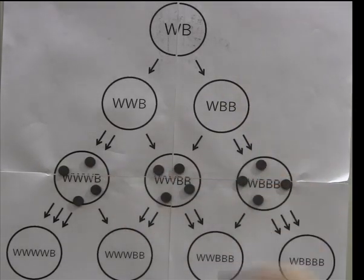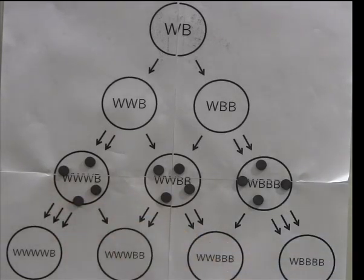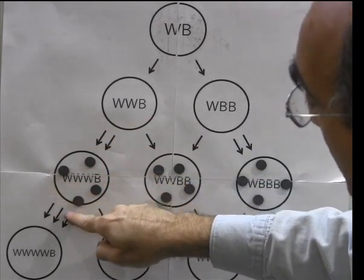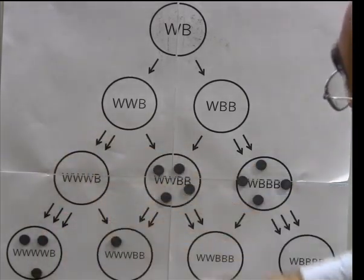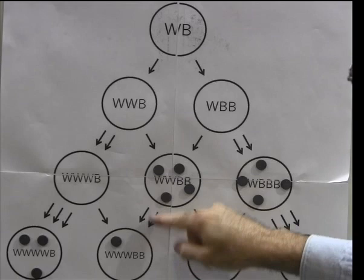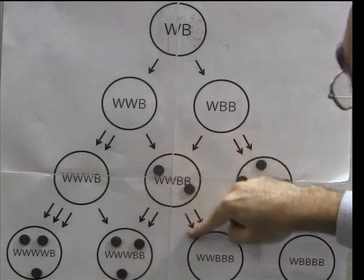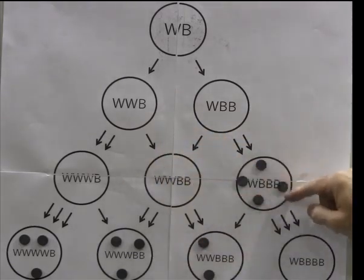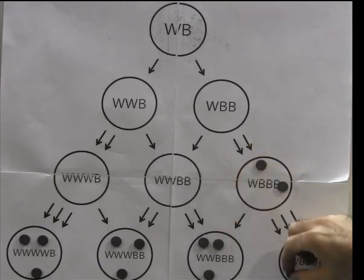Now each one of these three sites has four chips and has four outgoing arrows, so we can once again divide the chips evenly at each site among the four outgoing arrows. We're going to send one chip along each of these three arrows and one chip along this arrow. We're going to send a chip along this arrow and a chip along that arrow, then a chip along this arrow and a chip along that arrow. Finally from this site we'll send a chip along that arrow and these three chips along these three arrows.